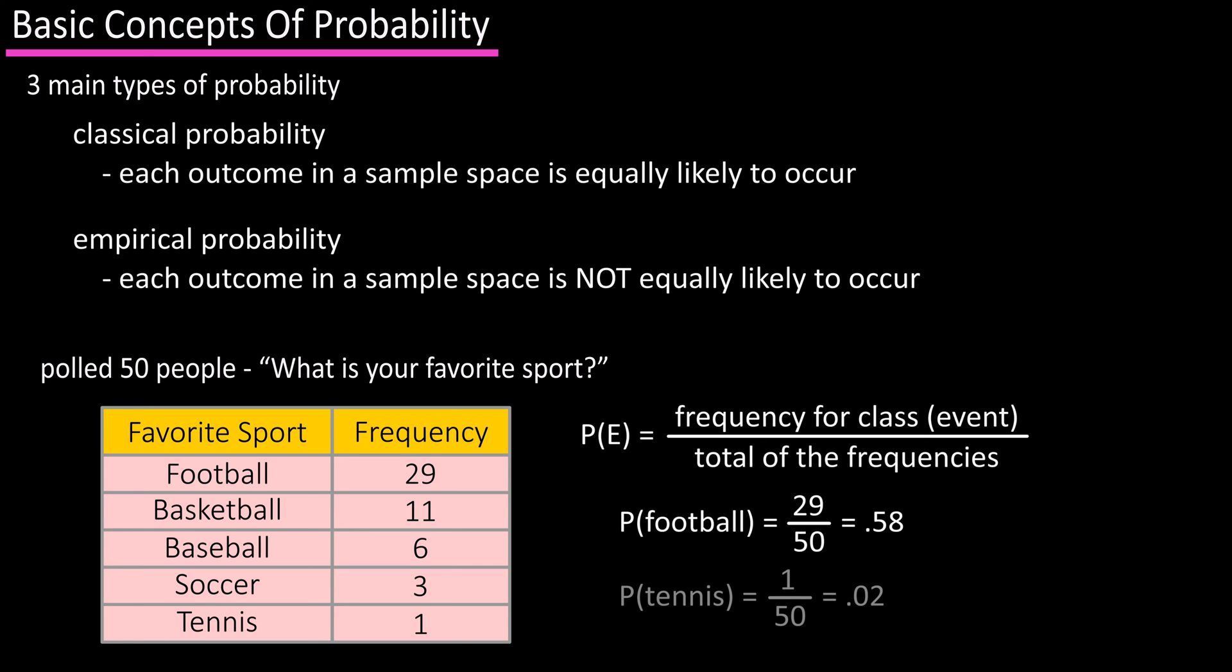And the probability of tennis being someone's favorite sport is 1 divided by 50, which is 0.02. And you can convert these to percentages by multiplying by 100 to get 58 percent and 2 percent.